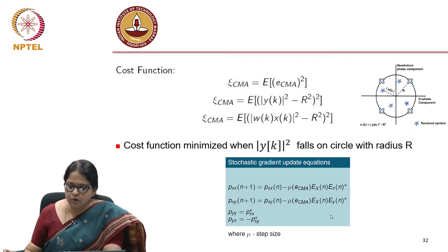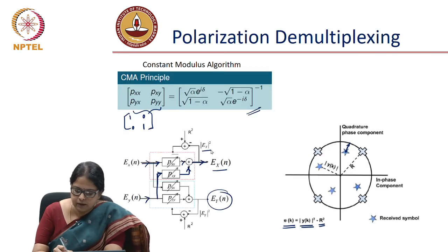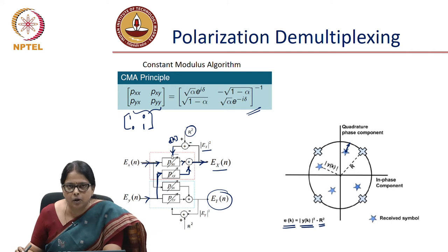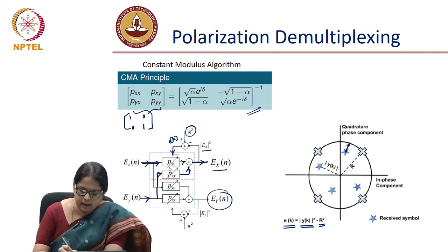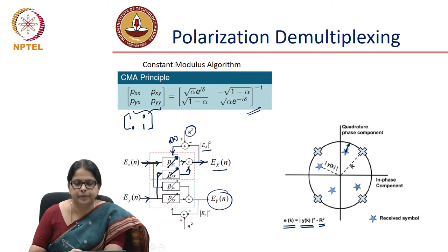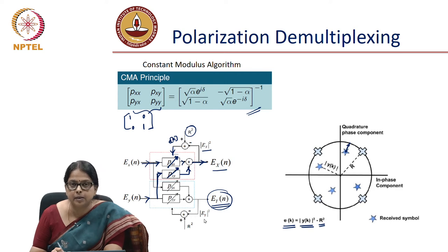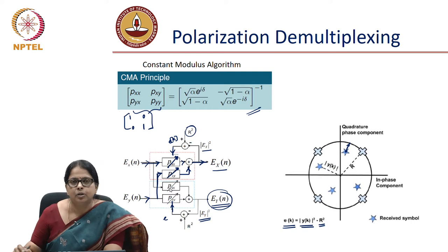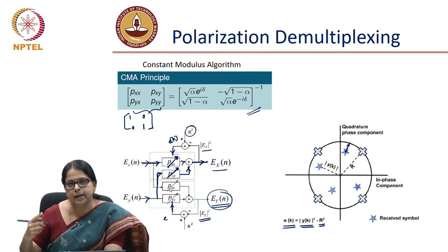You keep updating: you calculate |e_x|^2, feed in your r^2, calculate the error, and this error feeds back — just like in the adaptive algorithm — to update the Pxx variable. Similarly, it also updates the Pxy variable. The electric field for Y-polarization is reconstructed similarly, and the error corresponding to E_y is used to update Pyx and Pyy. So you are continuously updating Pxx, Pxy, Pyx, and Pyy.